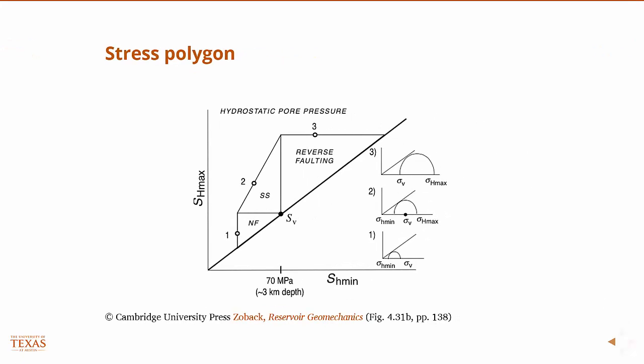And so then, just lastly, we have this notion of a stress polygon. And we'll use it more when we talk about wellbore stability. But basically, combining everything that we talked about pictorially, then you basically can say that the state of stress in the Earth, the value of sh-min, sh-max, and sv is always going to be in this polygon. So these bounds are essentially those inequalities that were on the previous page combined with Andersonian fault classification.